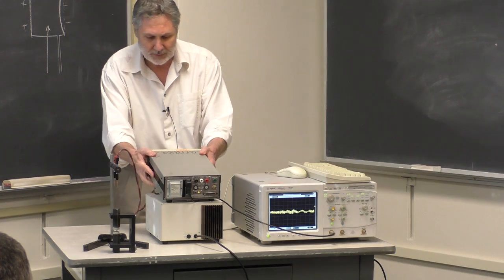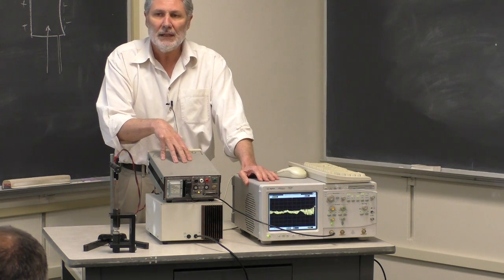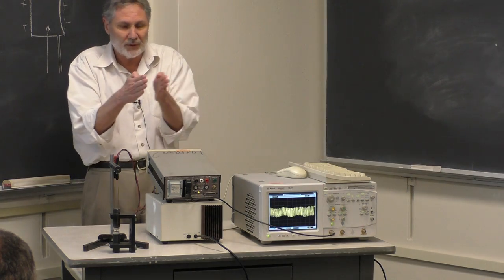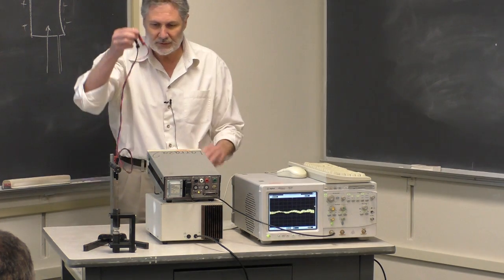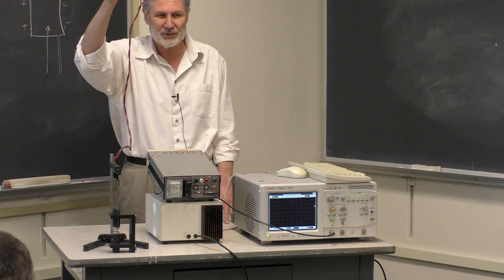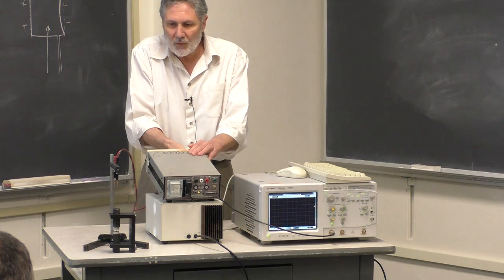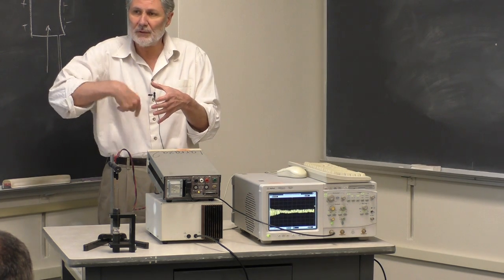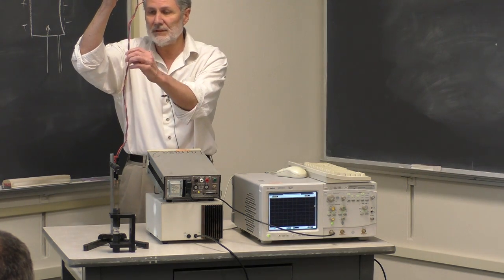To reduce noise, I twisted the wire pair — a twisted pair has very little loop area, so it's not an inductive antenna. Without twisting, the loop formed by two wires acts as an antenna; a fluctuating magnetic field through that loop induces a noise voltage. The twisted pair cuts that down.